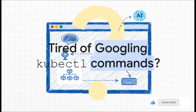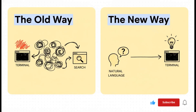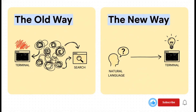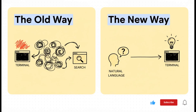you hit a wall. You can't remember the exact command for, say, scaling a deployment. It totally kills your momentum. And this right here is the perfect picture of that frustration. The old way is this clunky dance — you stop what you're doing, switch over to your browser, search Stack Overflow, copy some command you hope is right, and paste it back in. It's just constant context switching.